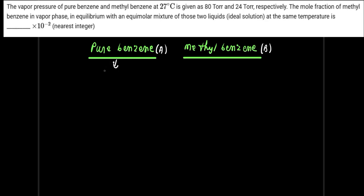Since both moles are equal, you can take any number of moles. Here, we'll take one mole of pure benzene and one mole of methyl benzene. The vapor pressure of pure benzene is 80 Torr, and the vapor pressure of methyl benzene is 24 Torr.